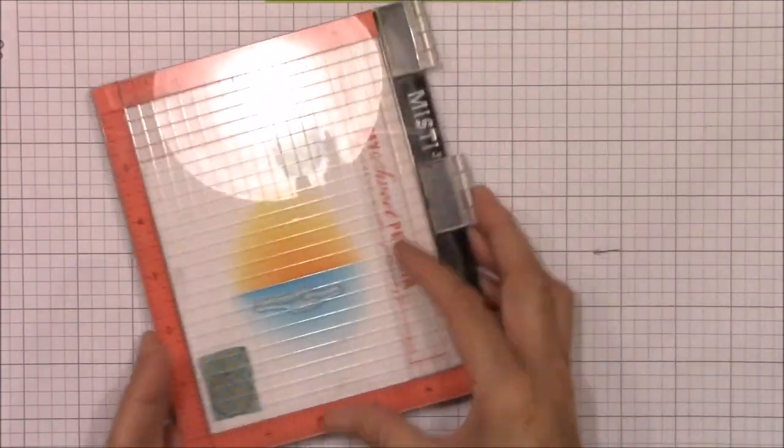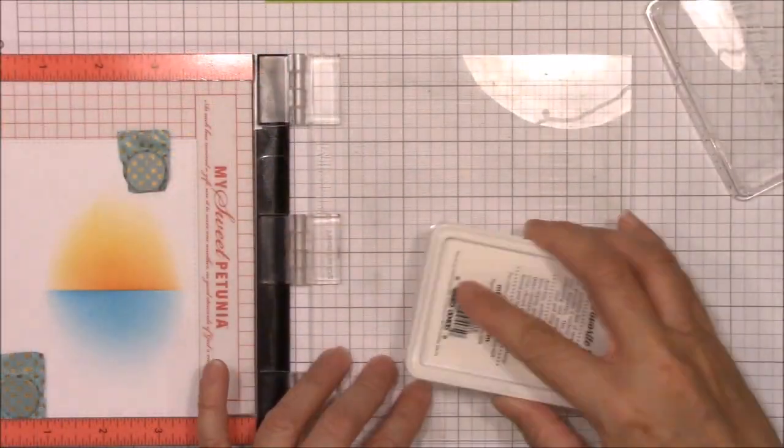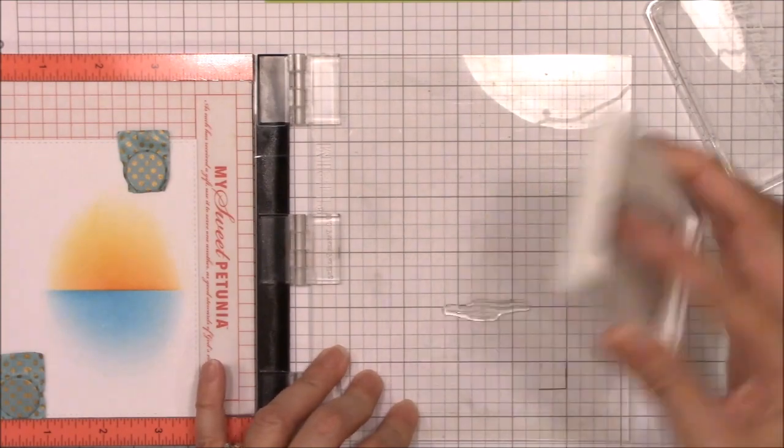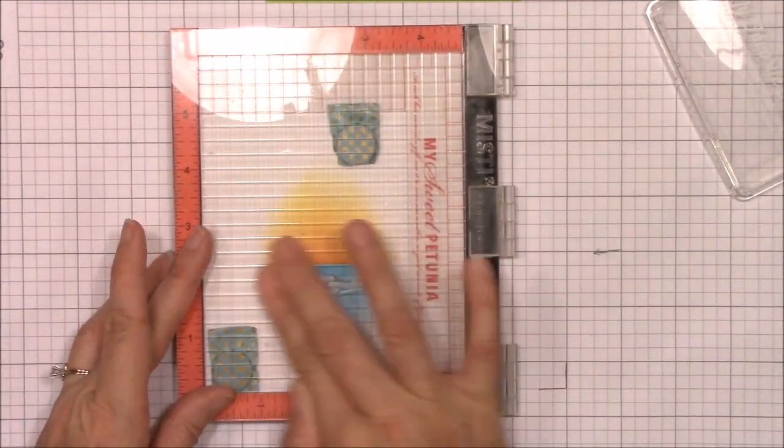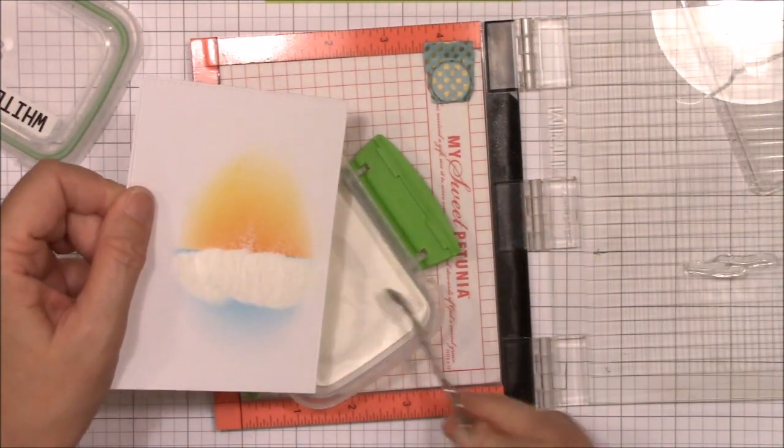To add a bit more realism, I stamped the waves with sweet tooth pigment ink and heat embossed them with white detail embossing powder. Don't forget to prep the area with your powder tool. Distress ink is wet and you don't want to accidentally add snow onto your tropical scene.